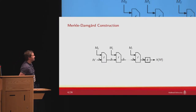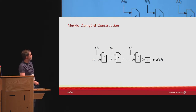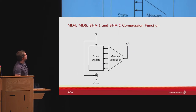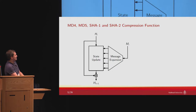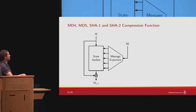RIPE MD and almost all hash functions from the 90s use the Merkle-Damgård construction, which means we have chained compression functions. The interesting part that distinguishes these hash functions happens in the compression function. For MD4, MD5, and SHA-2, the compression function resembles a block cipher with a wide state and a large key schedule — we have the message expansion and the state update where the chaining value gets updated together with the feed-forward.